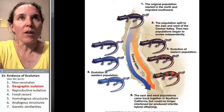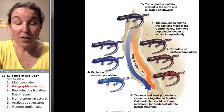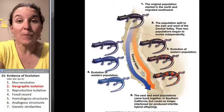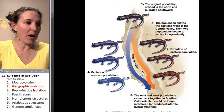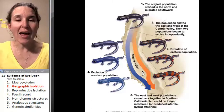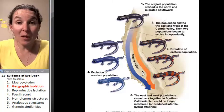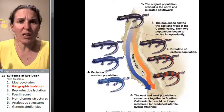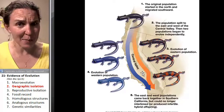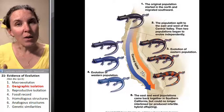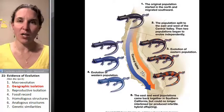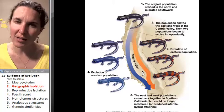They're going to be experiencing different pressures — different environments. Different variations are going to be more successful in those different environments. Now that they can't make babies with each other, not because they physically can't, but because they're not in the same place, they're going to experience different pressures on their gene pools.